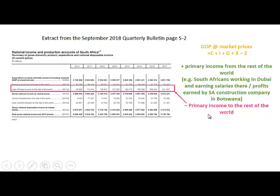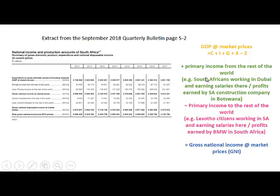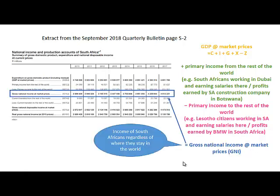Income paid to the rest of the world refers to people who work and earn income in South Africa but are not South African citizens — for example, foreign citizens working in South Africa and earning salaries here, or profits earned by BMW in South Africa because they have a factory here. GDP plus primary income received minus primary income paid to the rest of the world gives us gross national income at market prices, or GNI.